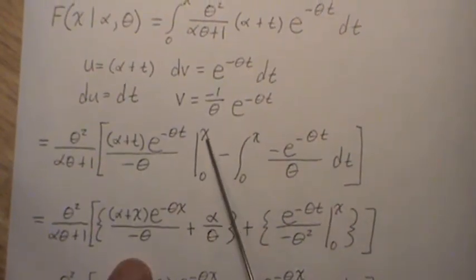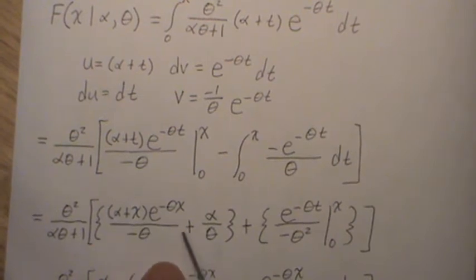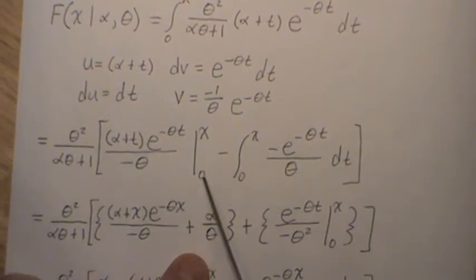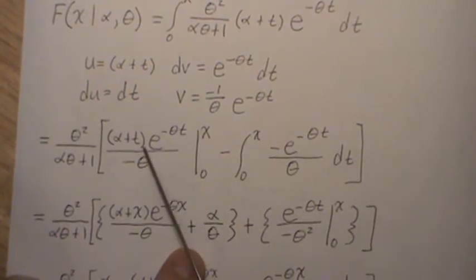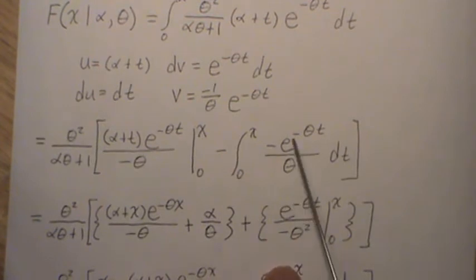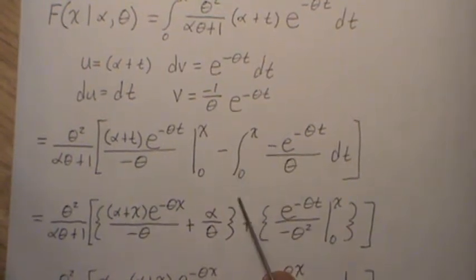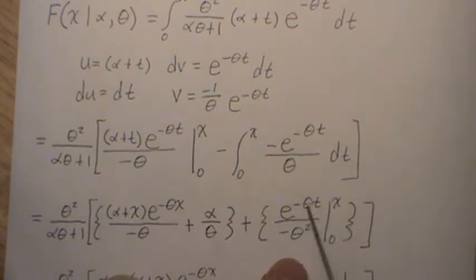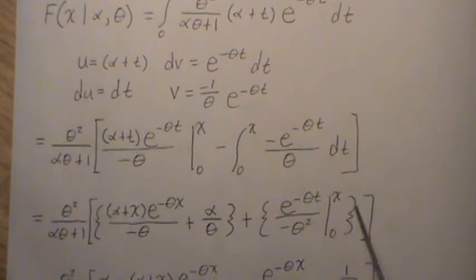So we plug in X for T, and then it's minus, and then we plug in 0, but the minus and minus makes it plus. You put in 0, that's a 1, that's just alpha, and we get this. Here, the integral of this is E minus theta T over minus theta squared. So this minus and minus I use to make that a plus, and then we integrate that, and we get another negative. And we're evaluating it from 0 to X.